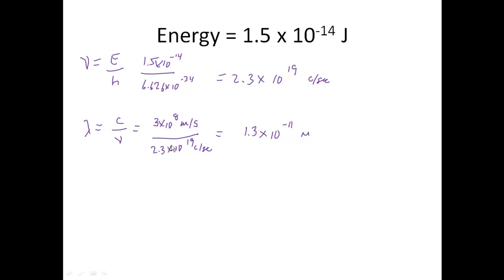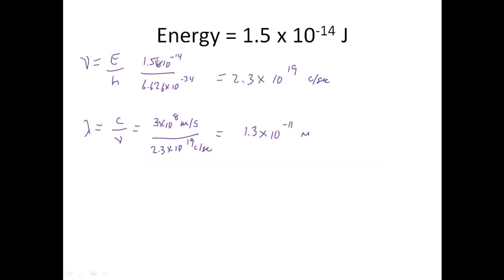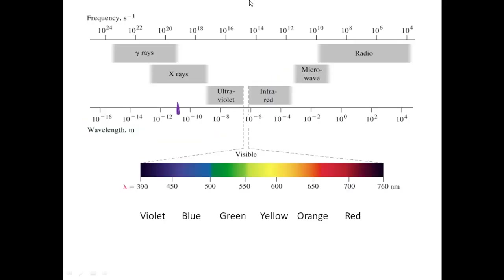Our wavelength is 1.3 times 10 to the minus 11th — so it looks like I'm down here in x-rays. Let's look at our frequency: 2.3 times 10 to the 19th. 10 to the 19th is right above that. So yes, we've done the right thing — we're sitting here in x-rays.